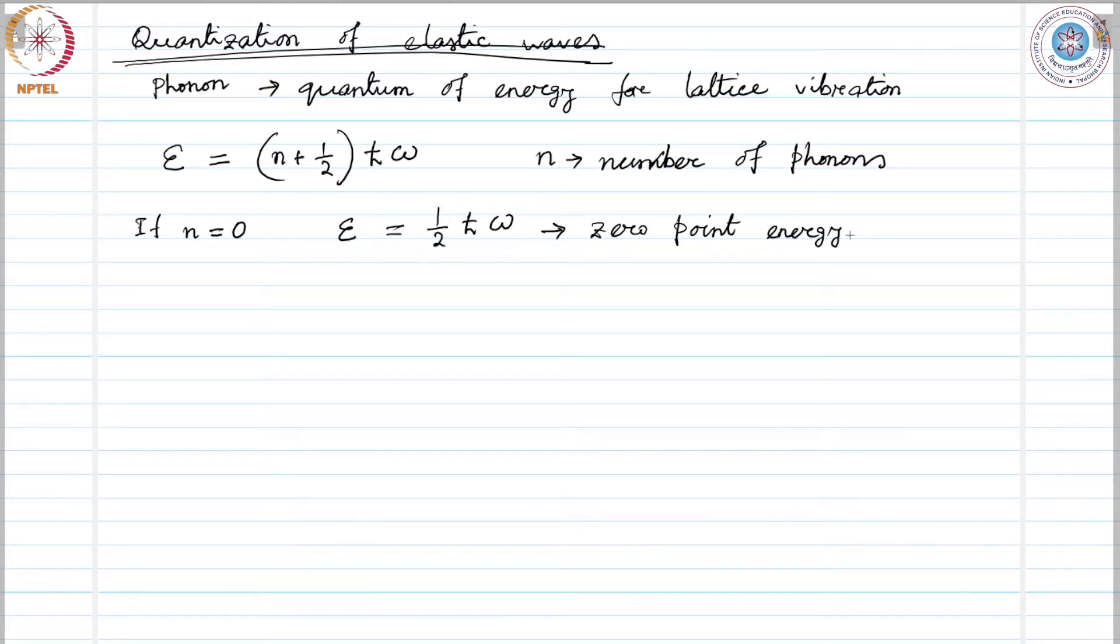We can quantize the mean square phonon amplitude. Consider the standing wave mode of amplitude u = u₀ cos(kx) cos(ωt). Here u is the displacement of a volume element from its equilibrium position. If we assume the equilibrium position to be x, it is the displacement from x.